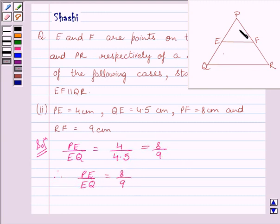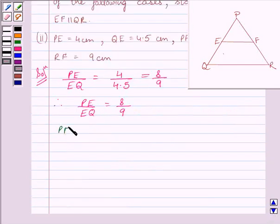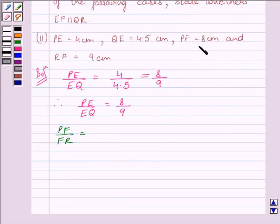Now we will find the ratio PF upon FR. So we can write PF upon FR is equal to 8 upon 9.